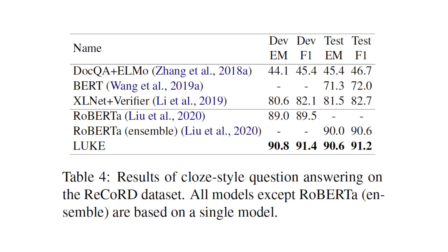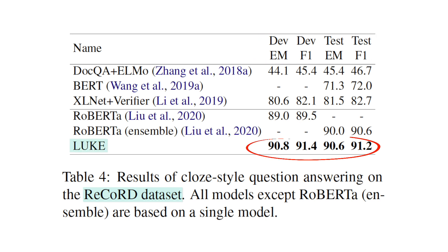The fourth task is cloze-style question answering. Given a question and a passage, the task is to find the entity that fits the missing entity in the passage. The dataset used is the ReCoRD dataset of over 120,000 examples. The challenging part about this dataset is that most questions cannot be solved without external knowledge. The models are evaluated using exact match and token-level F1 score on the dev and test sets. LUKE outperformed RoBERTa on both the single and ensemble versions.